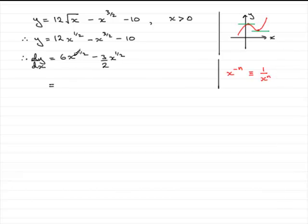So if we've got x to the minus a half, n is minus a half, this becomes 6 times 1 over x to the power half, which is 6 over x to the power half. This term's fine, so we'll just put that in as minus 3 over 2 x to the power half.